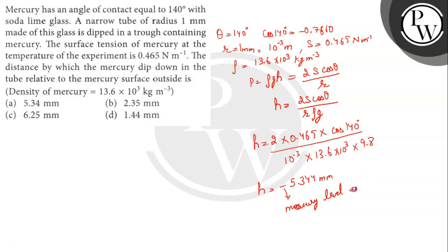Mercury level is depressed in the tube. So our answer is 5.34 millimeter, which means option a is correct.